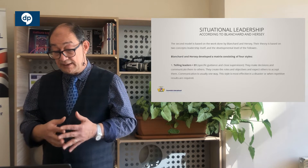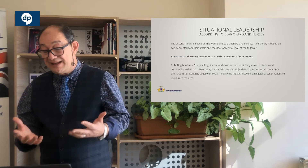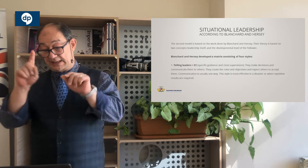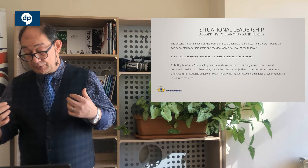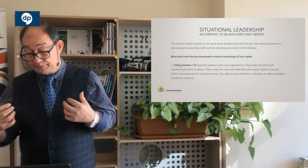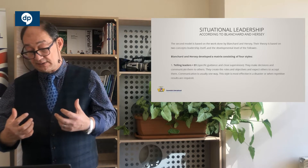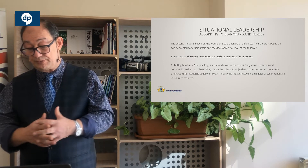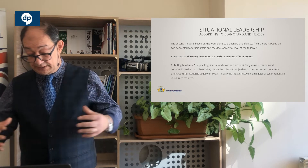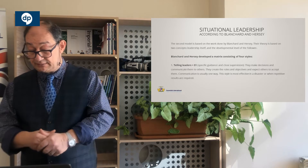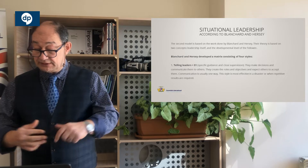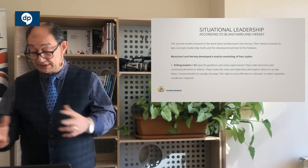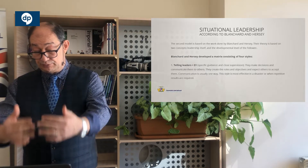The first style is the telling style — S1, Style 1 — which provides very specific guidance and close supervision to help the team get there. These leaders are good communicators; they create roles and objectives for team members to move them forward and they stay with them.